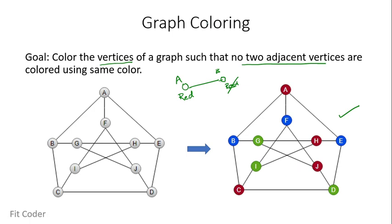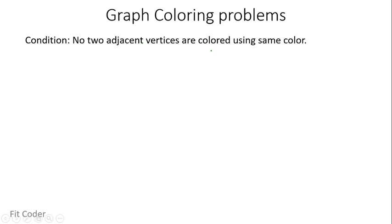Graph coloring is also known as vertex coloring. In graph coloring, we have three categories of problems that are possible. All categories satisfy the basic condition that no two adjacent vertices are colored using the same color.